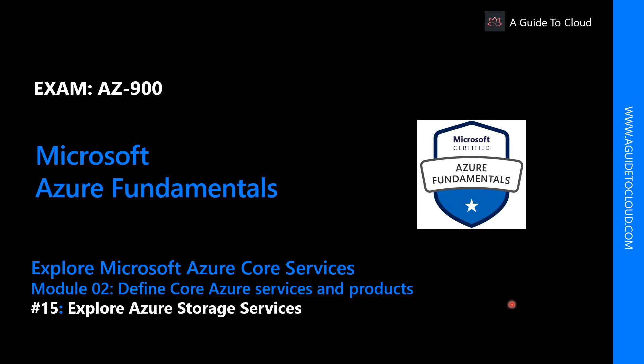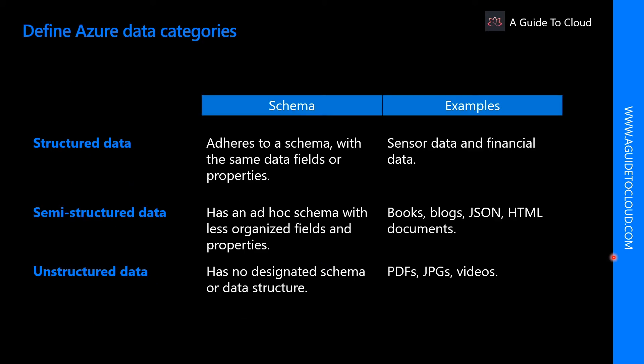When you think about data categories, you can generally think of data as structured data, semi-structured, and unstructured data. Structured data is data that adheres to a schema, so all the data has the same fields or properties. Structured data can be stored in a database table with rows and columns. It relies on keys to indicate how one row in a table relates to data in another row of another table. Structured data is also known as relational data.